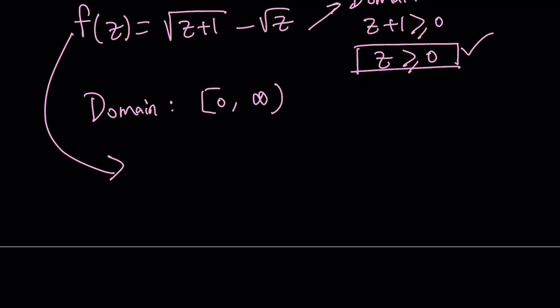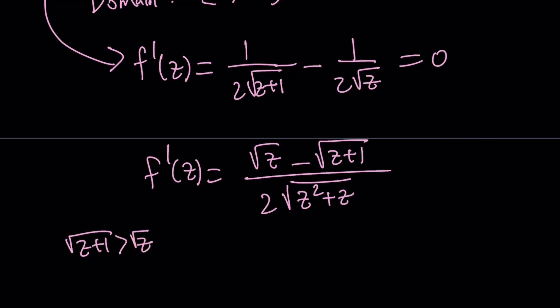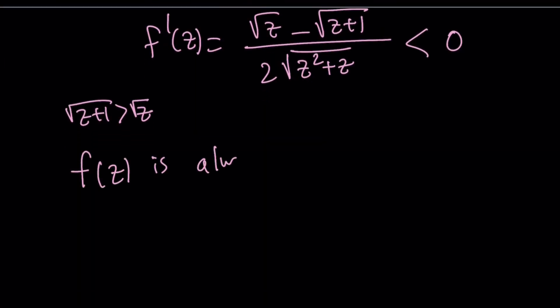We're considering this function. Let's go ahead and differentiate this function and see what happens with the derivative. So this is a radical function. We can differentiate it as 1 over 2 times square root of z plus 1, and the other one as 1 over 2 times the square root of z. And of course, I want to set it equal to 0 and find the critical points. But if you make a common denominator, you get the following from f prime: square root of z minus the square root of z plus 1 divided by 2 times the square root of z squared plus z. And it's equal to 0. Obviously, if you set it equal to 0 from here, you're not going to get any solutions. Because z can never equal z plus 1. Because this expression, the square root of z plus 1, is always going to be greater than square root of z for obvious reasons. Therefore, this is always going to be a negative expression, which means f of z is always decreasing.